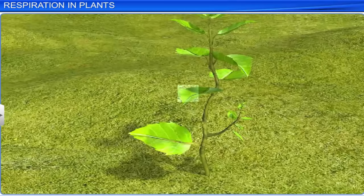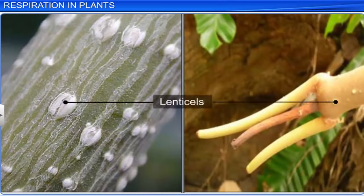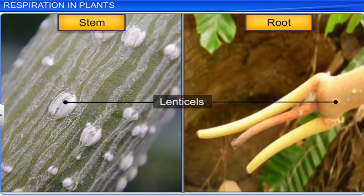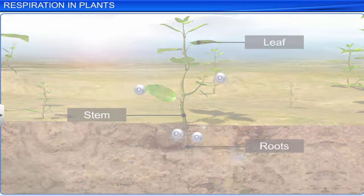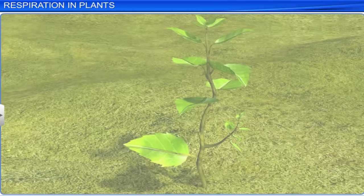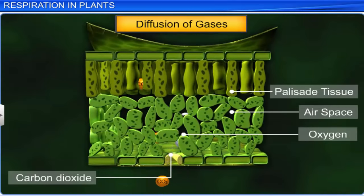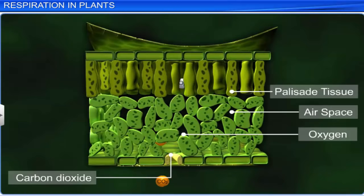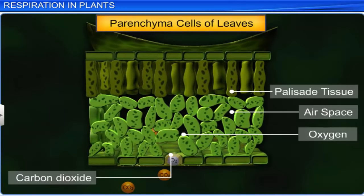Plants respire through small openings called the stomata on leaves, and lenticels on stems and roots. Unlike animals, each part of the plant takes care of its oxygen needs. Plants respire at a slower rate as compared to animals. In woody stems, the living cells are present close to the surface and aid in the diffusion of gases. Diffusion of gases is also facilitated by the presence of loosely arranged parenchyma cells that provide air spaces.